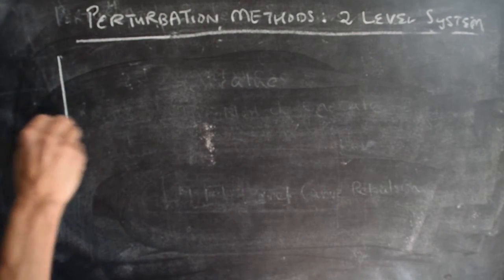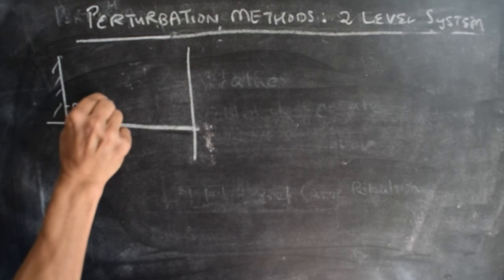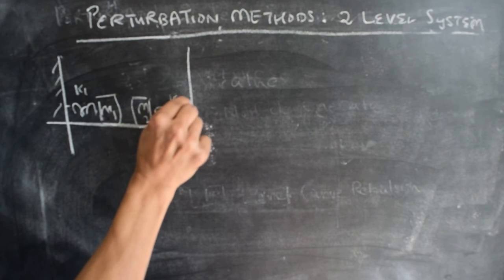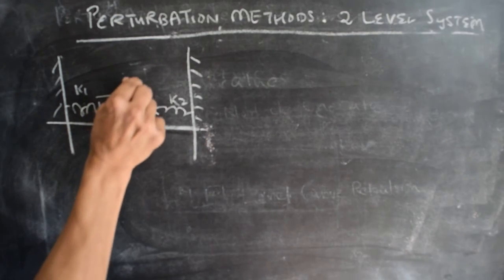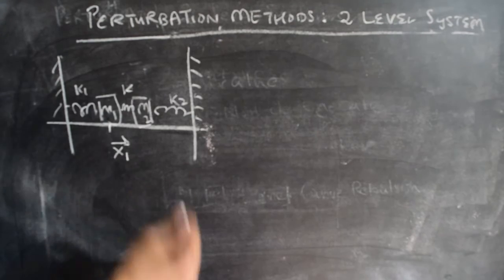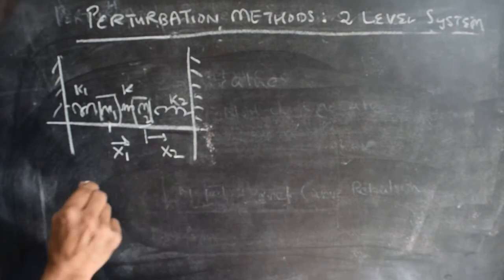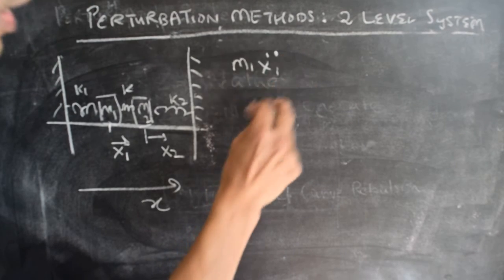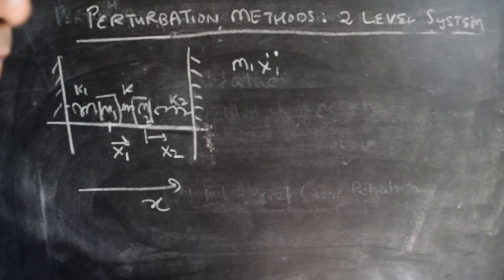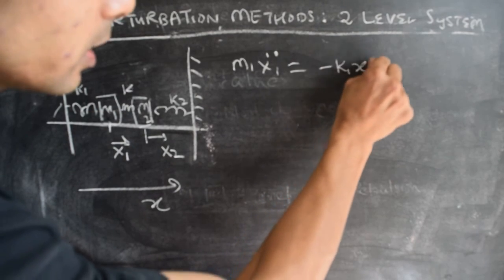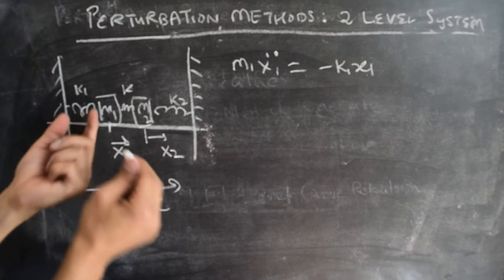The system we'll consider is this: we have a rigid wall, a mass m1 coupled with spring constant k1 to it, and another mass m2 coupled with spring constant k2 to the other end of the rigid wall, with a small coupling kappa between them. Let's write down the equation of motion for both oscillators. Assume oscillator one is displaced by x1 and oscillator two by x2, both along the positive x-axis. The equation of motion for the first mass: m1 x1-double-dot equals minus k1 x1.